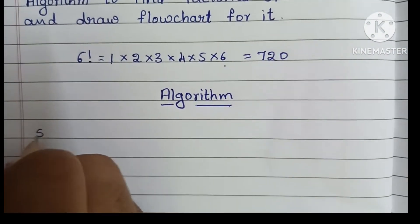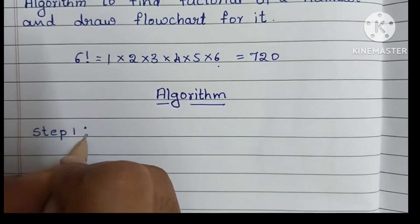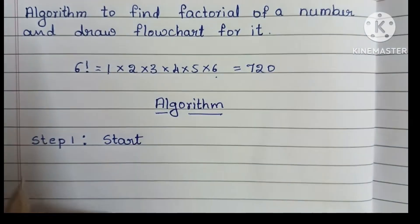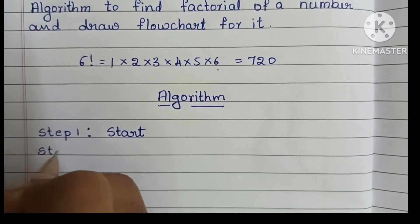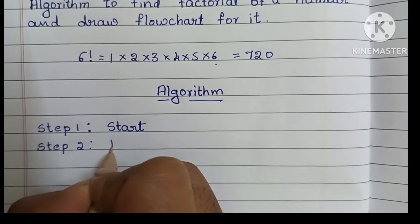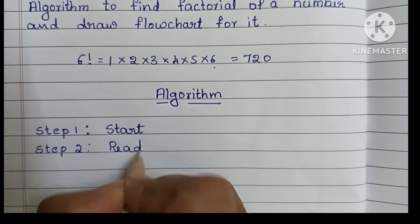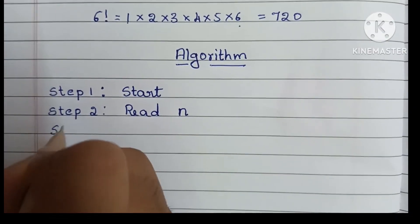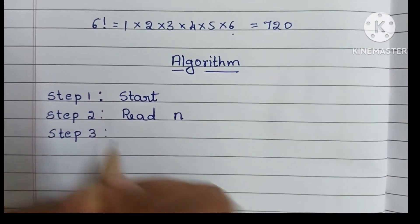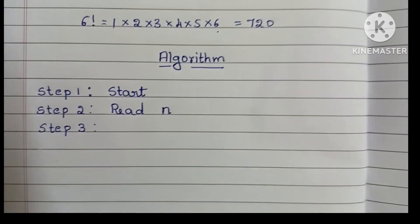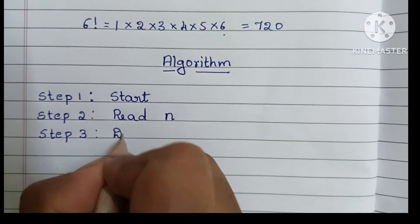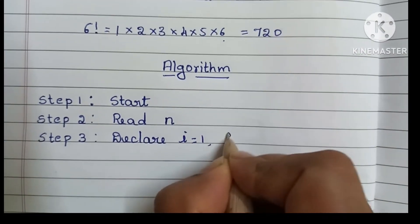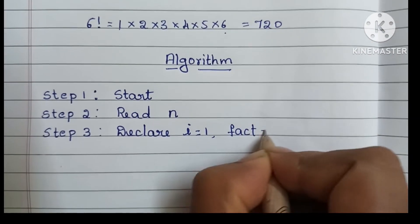Step 1: An algorithm always starts with a start statement. Step 2: We have to read a number, that is read the value of n. Step 3: We have to declare two variables — i and fact — where i is equal to 1 and fact is equal to 1.